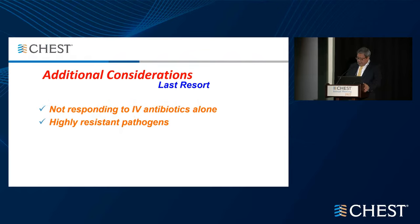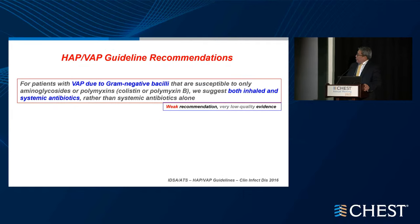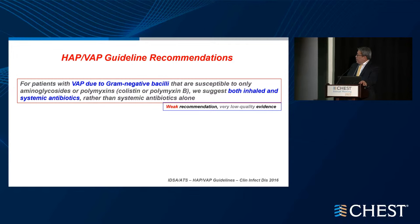For additional considerations — what if patients don't respond to IV therapy alone, or have highly resistant pathogens? The guideline for VAP due to gram-negative organisms susceptible only to aminoglycosides or polymyxins suggests using both inhaled and systemic antibiotics rather than systemic alone. This is a weak recommendation.